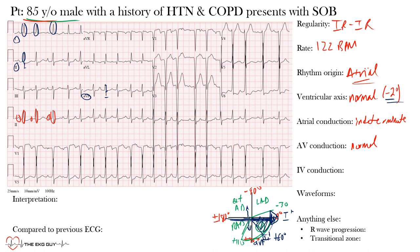For intraventricular conduction, the normal QRS duration in adults is 70 to 110 milliseconds. We can see narrow QRS complexes, and the QRS duration was 98 milliseconds, confirming normal IV conduction. Note that the QRS duration will be the same for each beat because everything below the AV node is occurring normally — the only issue is the different atrial origins above.